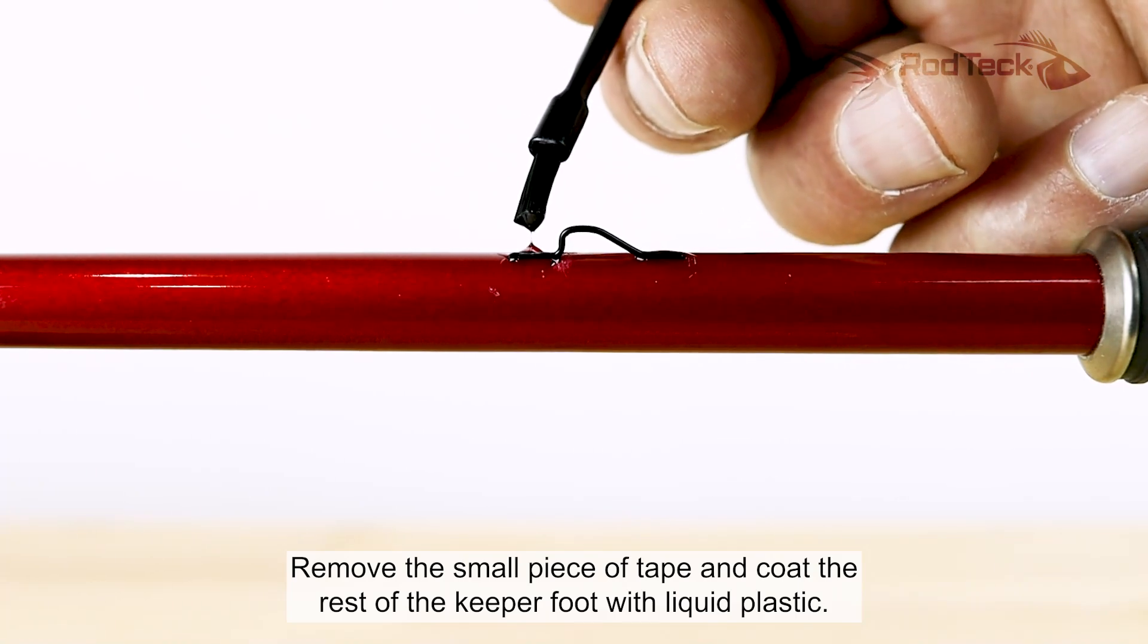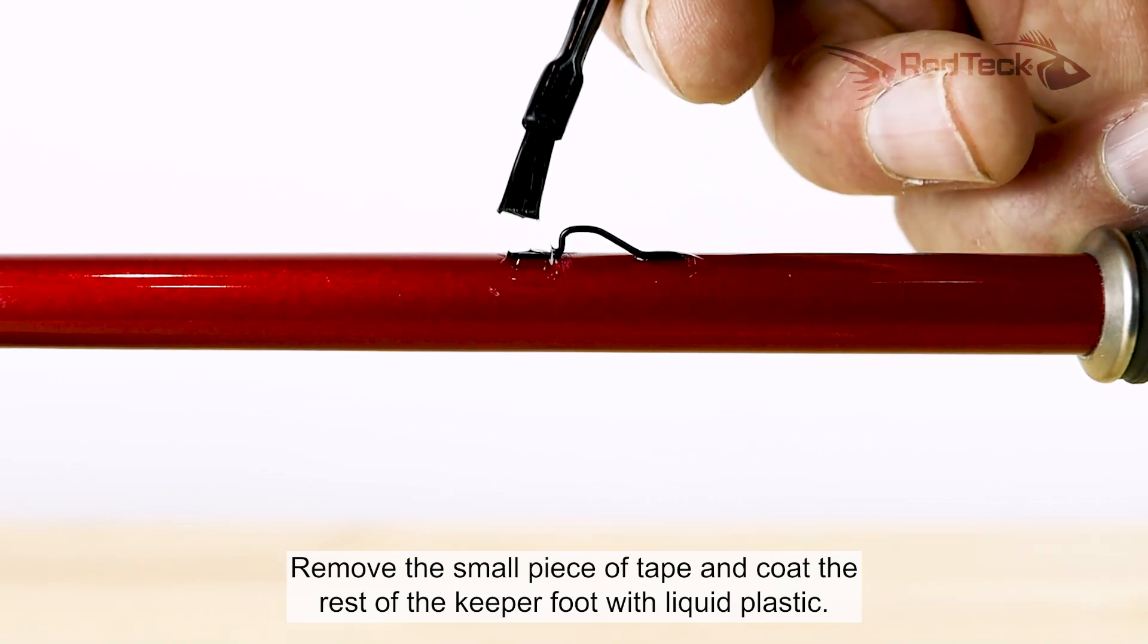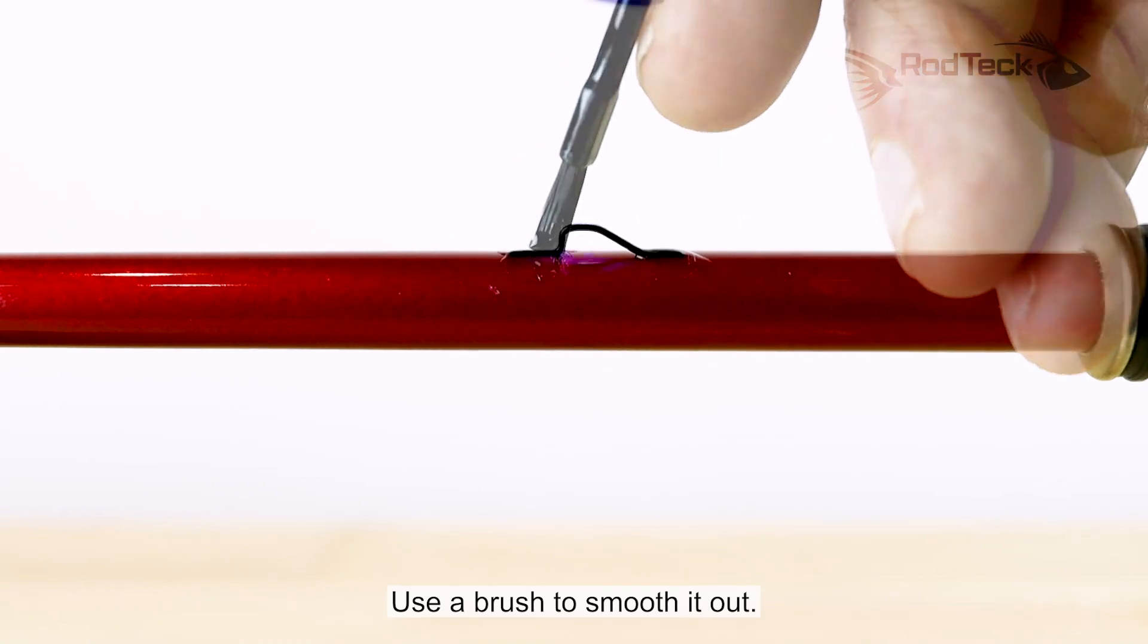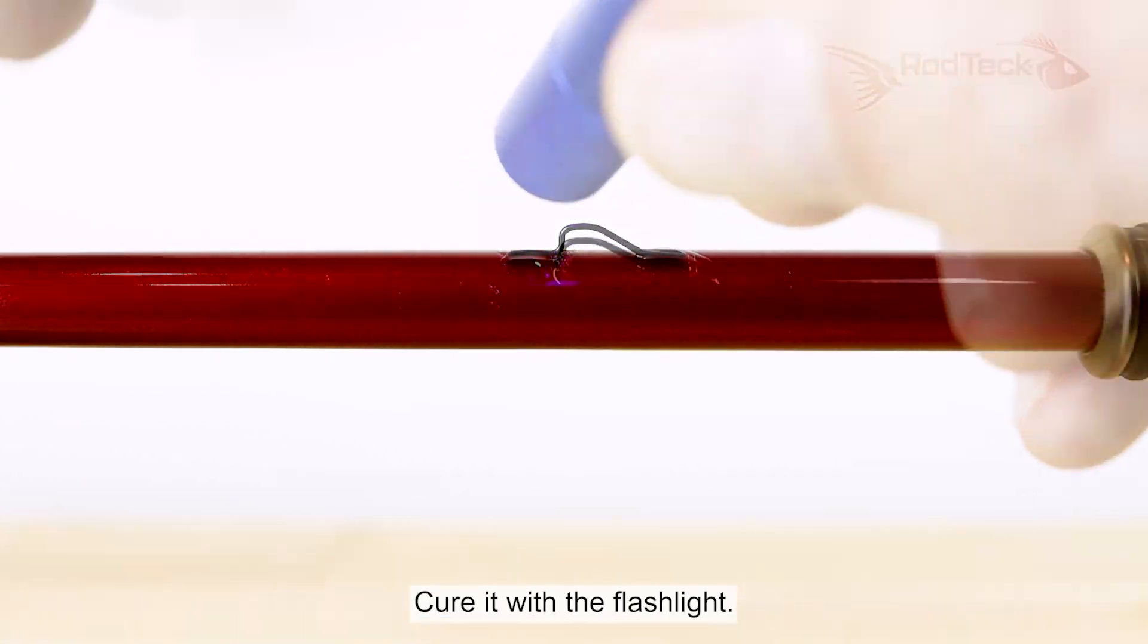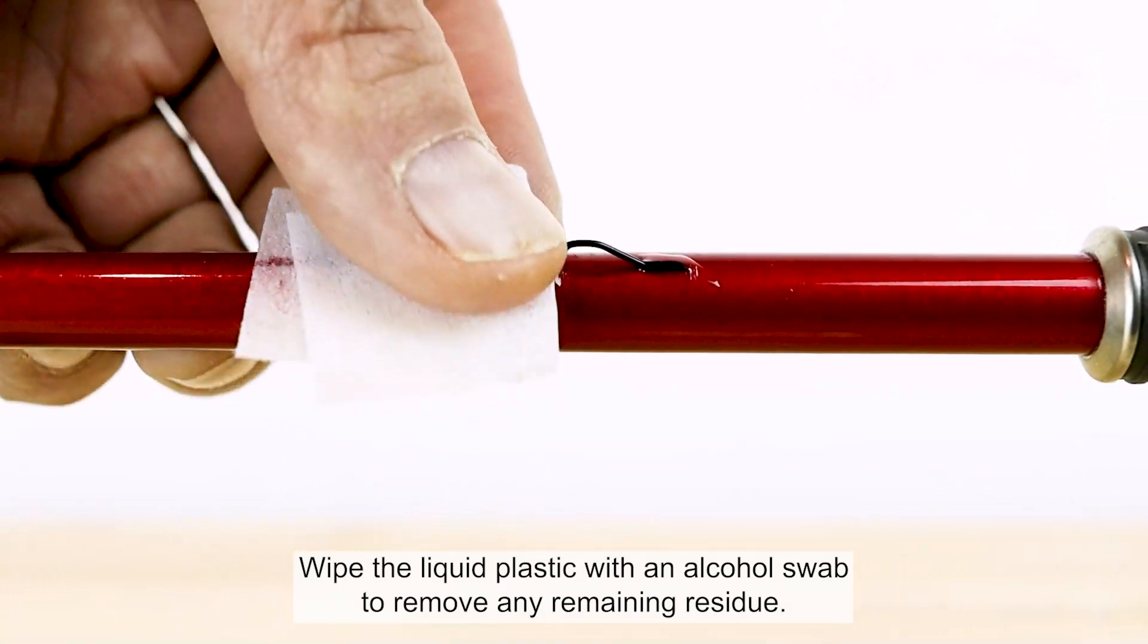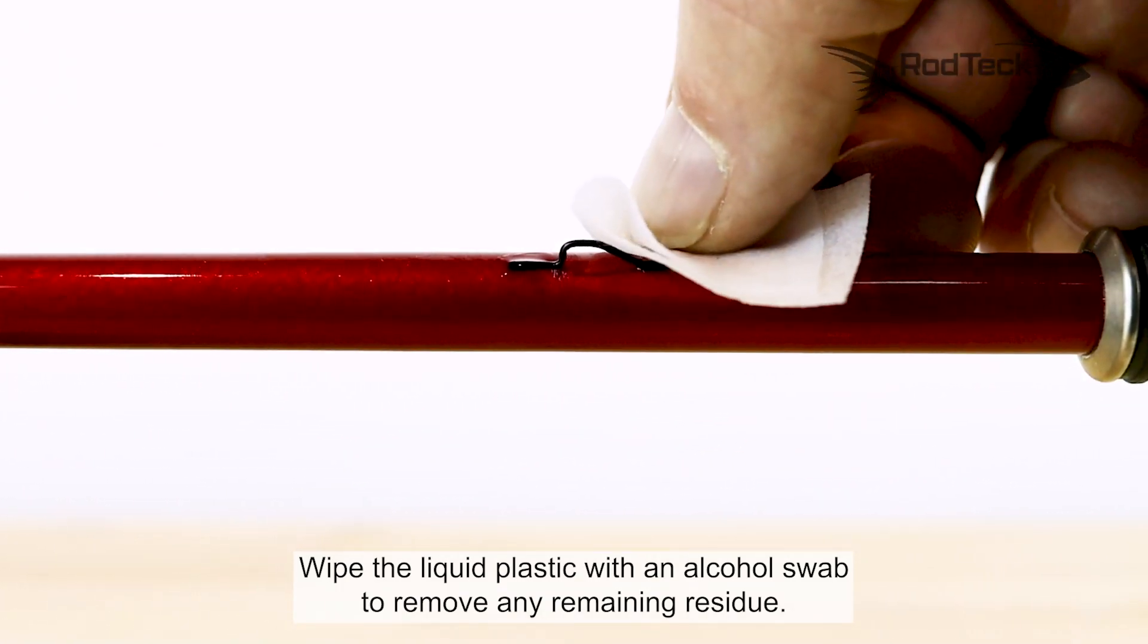Remove the small piece of tape and coat the rest of the keeper foot with liquid plastic. Use a brush to smooth it out. Cure it with the flashlight. Wipe the liquid plastic with an alcohol swab to remove any remaining residue.